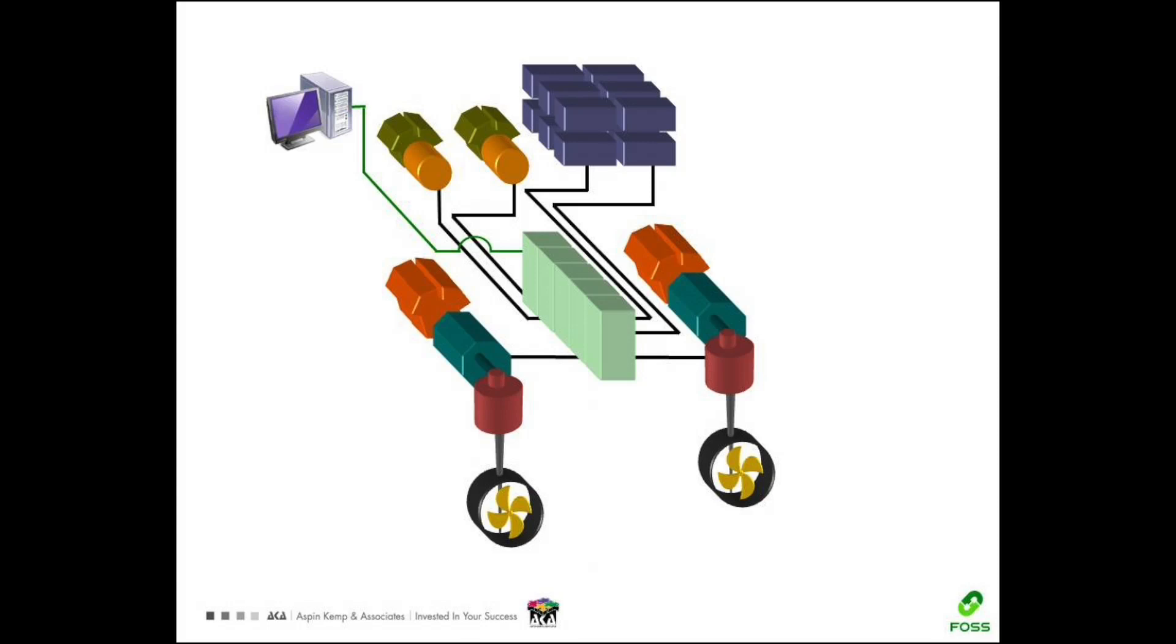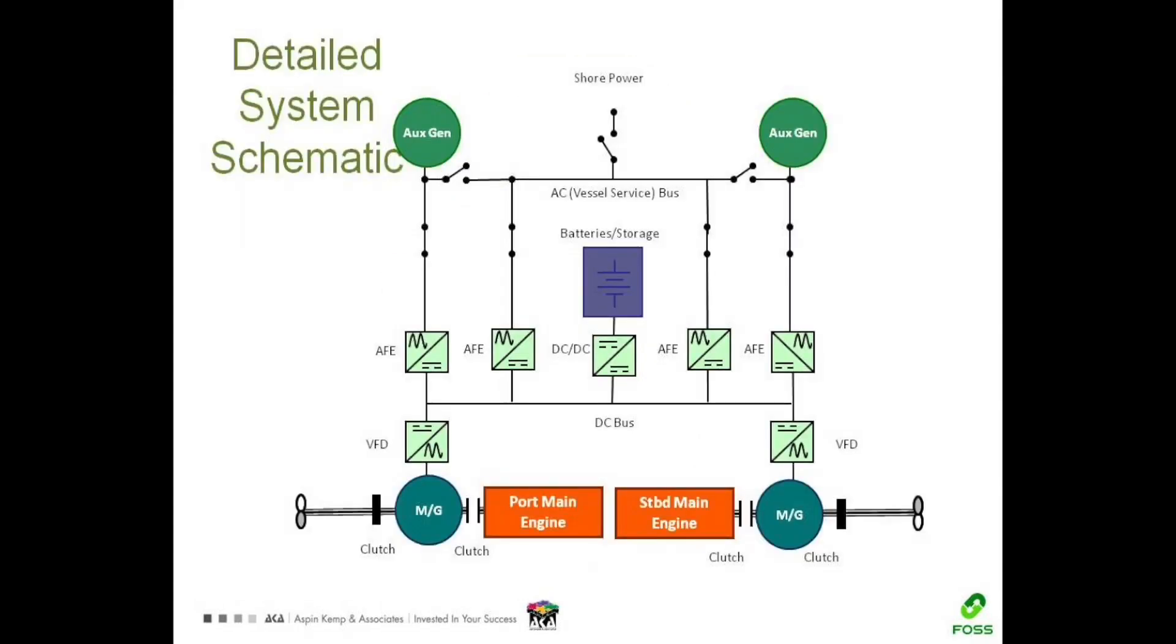We talk about kind of a detailed one line, if there's such a thing as a detailed one line. We talk about the system configuration here, which is what was delivered essentially on the Carolyn-Dorothy. You've got an AC bus here, which is providing hotel load to the various AC loads on the vessel. You've got a DC bus, which is providing all of the major consumers with power. The major consumers would be the motor generator sets, which are connected to the propellers. And you've got your auxiliary generators, which are able to provide power to the DC bus through these converters here. So I'll go through some of the terms quickly.